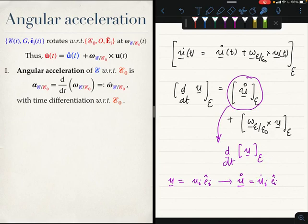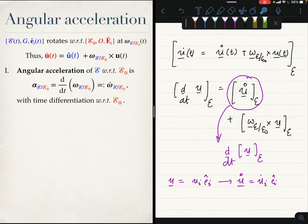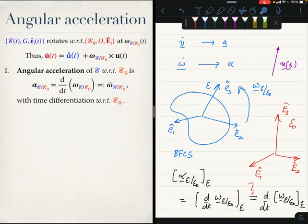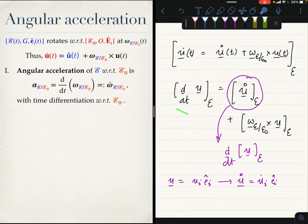In general, there is no reason to believe that the components of the time derivative of vector u in the BFCS are the same as the time derivative of the components of the vector in the BFCS, because there is this correction factor. Coming back to our original question: what we want is the components of the angular acceleration in the BFCS, which equals the components of the time derivative of the angular velocity vector computed in the BFCS. The question is whether it equals the time derivative of the components of the angular velocity vector in the BFCS. Generally it is not, but let us explore the question a little bit further.